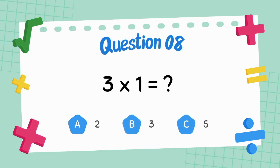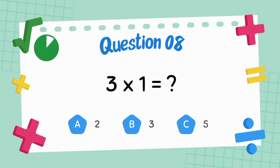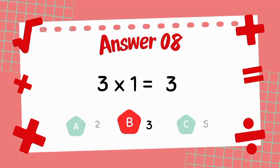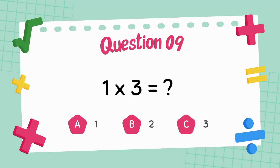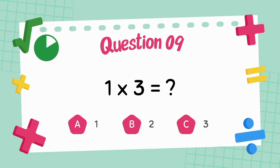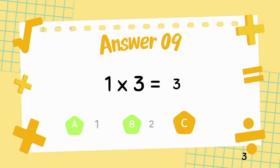What is three multiply one? What is one multiply three? The answer is three.